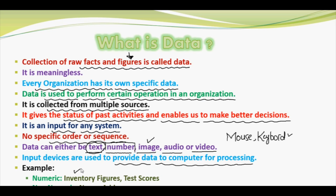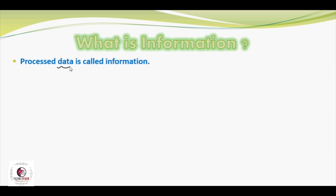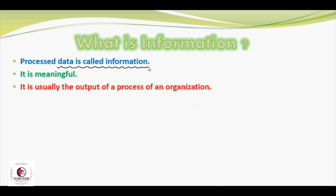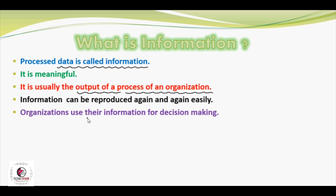After processing, this data is converted into information. Now comes the definition of information: processed data is called information. This is a very simple definition — the data that was entered into the computer, when processing is performed on it, is converted into information. It is meaningful, and it is usually the output of a process of an organization. Whatever output is generated when an organization's data is processed, we call it information. Information can be reproduced again and again — whenever an organization's data changes, like students change every year, patients change in hospitals, account holders' information changes in banks.